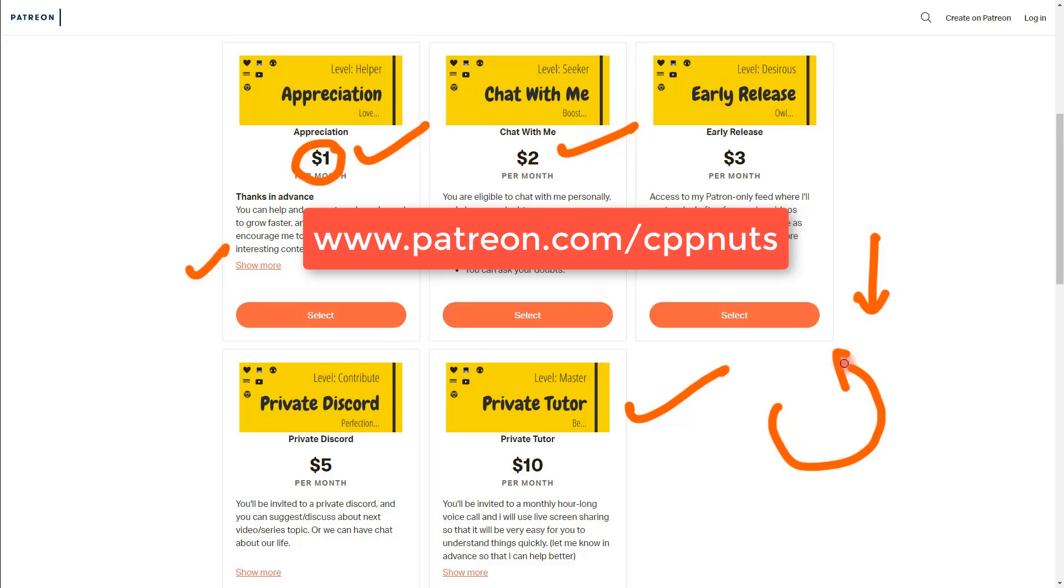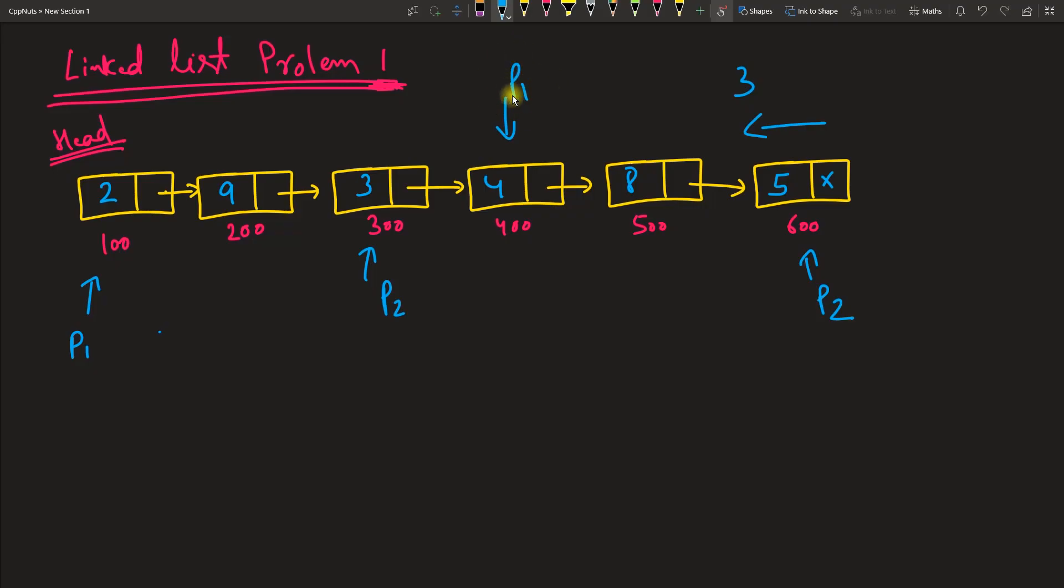So p1 will give you the answer. I'll repeat this quickly—just listen carefully. We need two pointers, p1 and p2. If I say fourth from the back, then increment p2 three times because you're already at the first position.